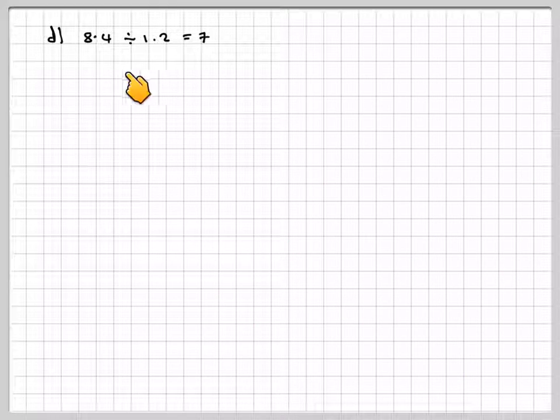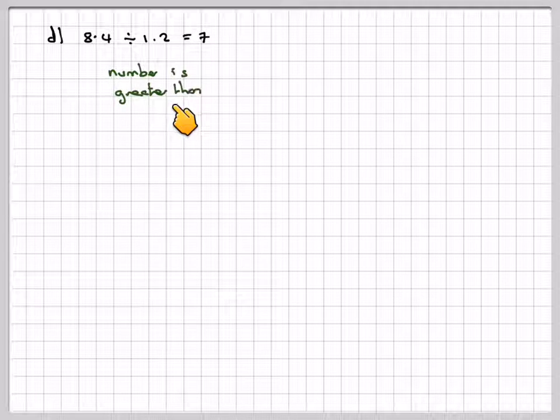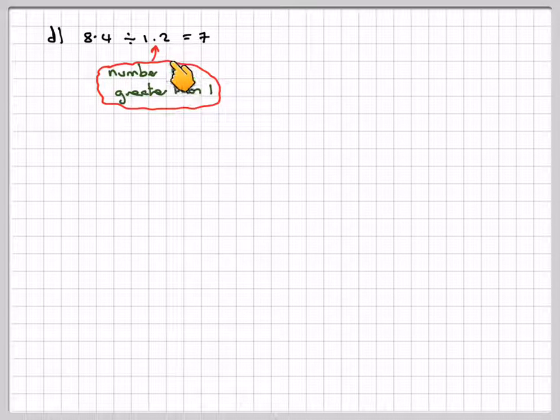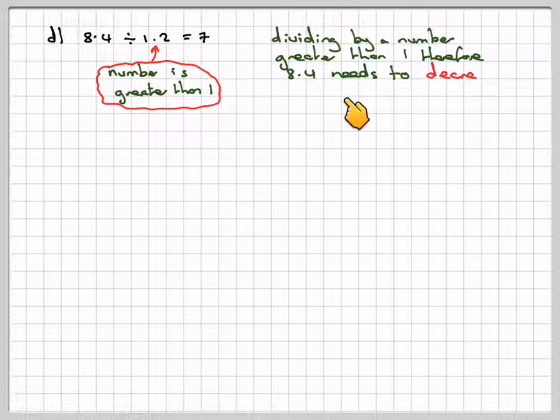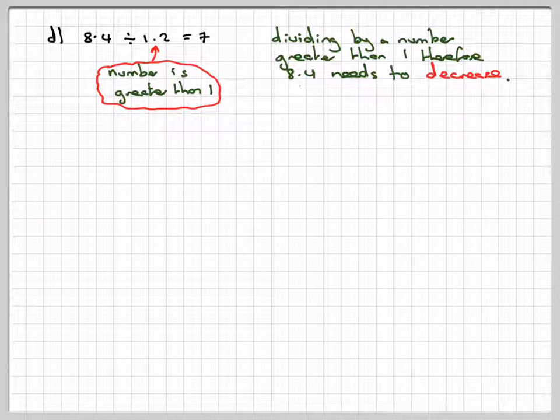Part D, 8.4 divided by 1.2 is equal to 7. The number is greater than 1. 1.2 is greater than 1. So dividing by a number greater than 1, therefore 8.4 needs to decrease. 8.4 has decreased, so therefore this one could be correct.